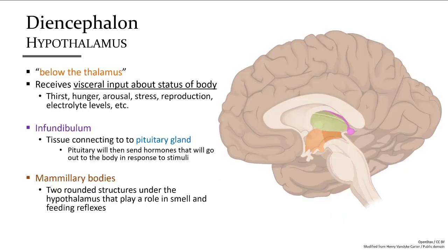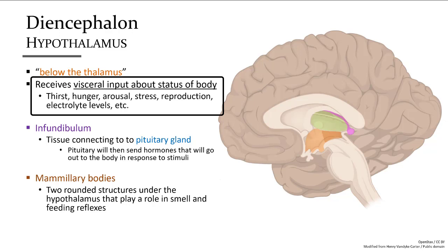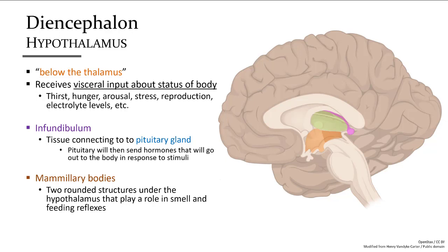The hypothalamus and subthalamus are the regions below the thalamus. The hypothalamus receives very diverse input from body tissues and visceral organs, including hunger, thirst, arousal, blood pressure, electrolyte content, and milk production in lactating women. When changes must be made in response to any of these stimuli, a signal is sent to the pituitary gland, which will release hormones targeting the areas needed.